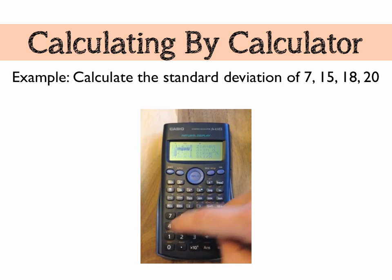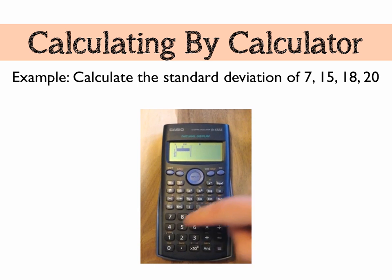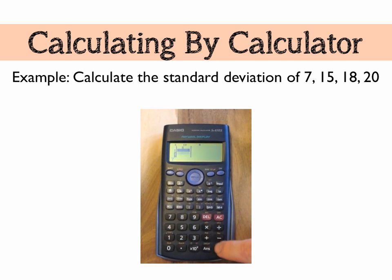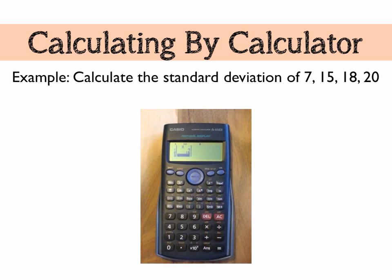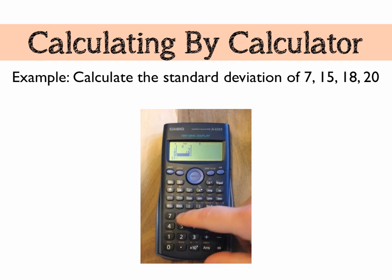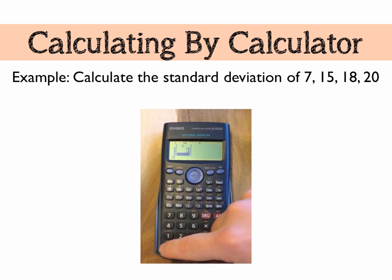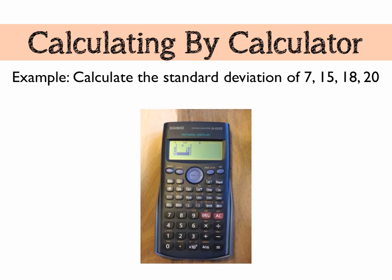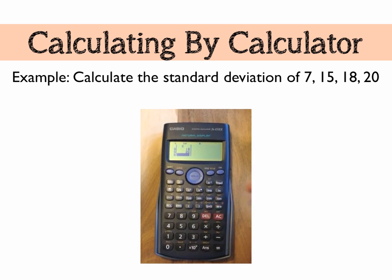We're going to add our data values in, pressing equals in between each data, thus adding them to the table. Last one, number 20, there we go. Now we're going to add it to the calculator's memory by pressing M plus, and now we can clear it.